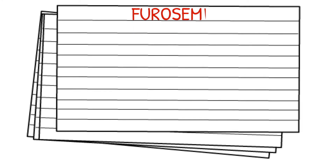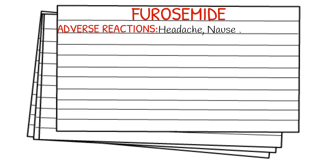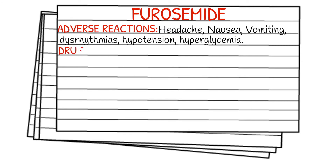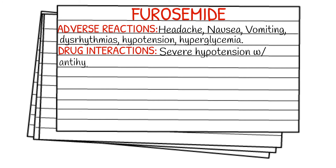Adverse reactions of furosemide can include headache, nausea, vomiting, and dysrhythmias — anytime we affect the electrolytes in the body, we can definitely see dysrhythmias — as well as hypotension and hyperglycemia. Drug interactions include severe hypotension with antihypertensives and nitrates, and also toxicity with lithium and digoxin.